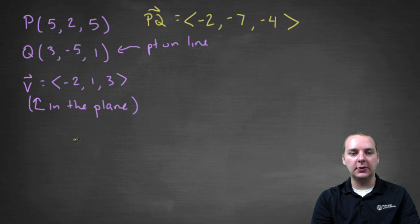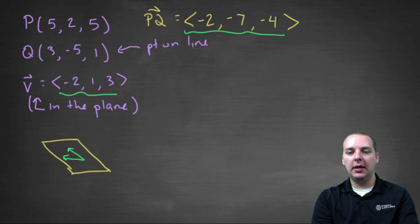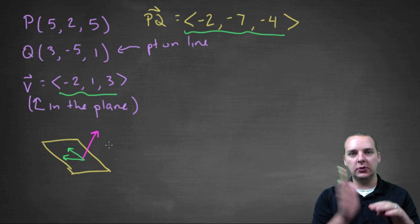And this is a vector in the plane, so if you had a plane that looks something kind of like this, what we just found are two vectors, like this guy and this guy for example. We just found two vectors that are both in the plane, and what I'm about to do is take their cross product, which will give me a vector that's orthogonal to the plane.